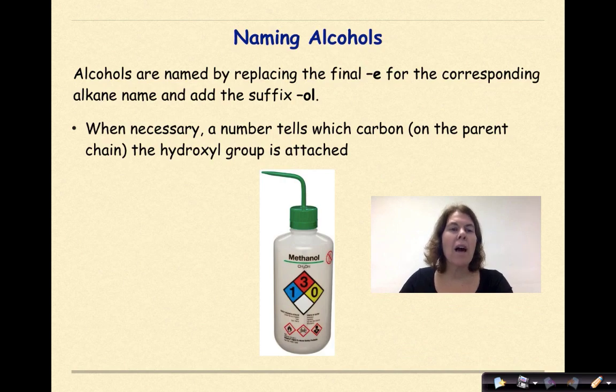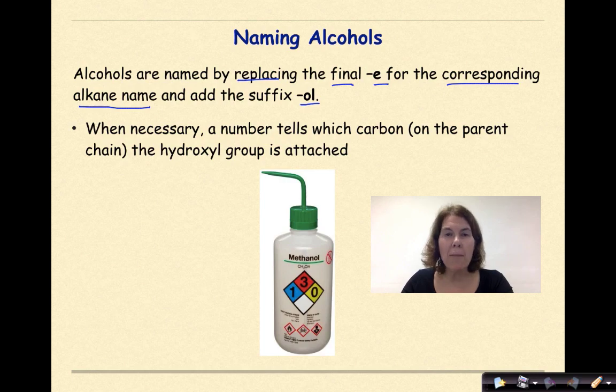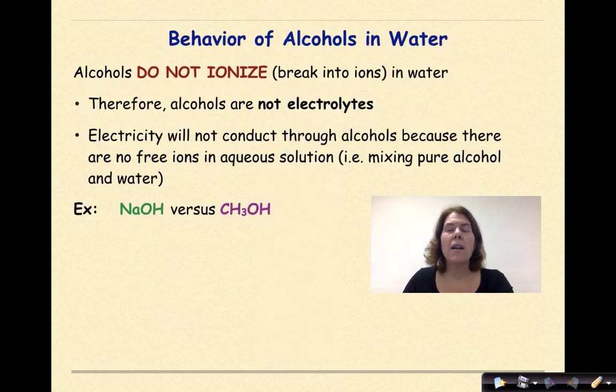Naming alcohols. Alcohols are named by replacing the final E for the corresponding alkane name and adding the suffix -ol. So drop the E, add an -ol. Could we do this with alkenes and alkynes? Yes, we could, but for the sake of this course, we're going to focus on alkanes. When necessary, a number tells which carbon on the parent chain the hydroxyl group is attached.